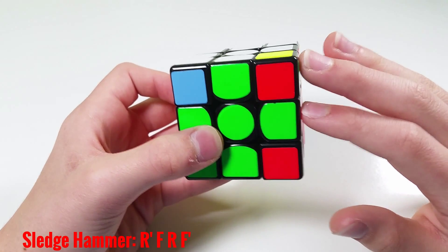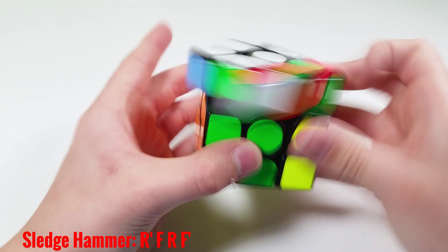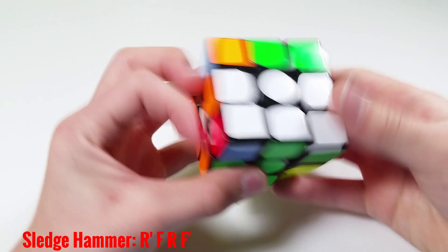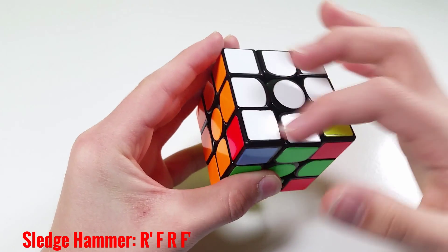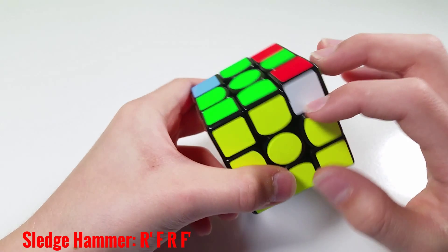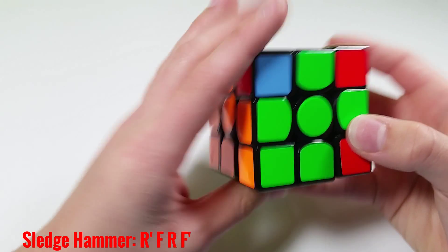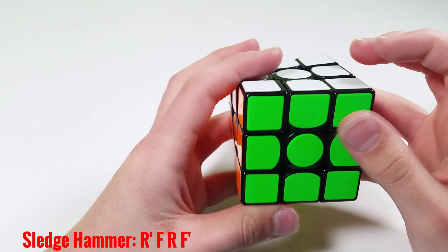So this algorithm will be used when you have this F2L case here. You normally just do a triple sexy move like that, though when all the pieces on top are oriented, except this one corner down here, you can just do a triple sledgehammer and get the OLL skip.